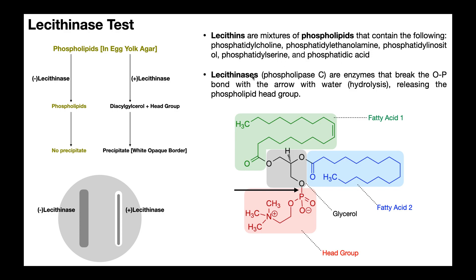Now lecithinases are enzymes that break down the lecithins — we know it's an enzyme because of the 'ase' at the end. Here is an example of a phospholipid. We'll look at these structures in more detail in the next slide, but basically what the lecithinase is going to do is use water to break this bond between this oxygen of the glycerol backbone and the phosphorus of this phosphate.